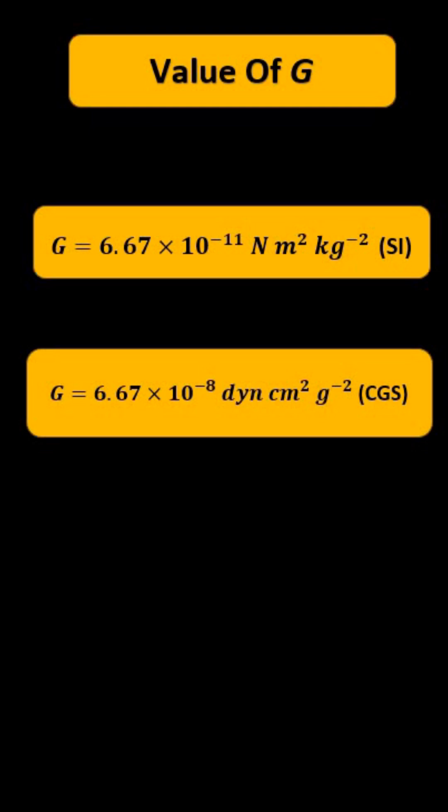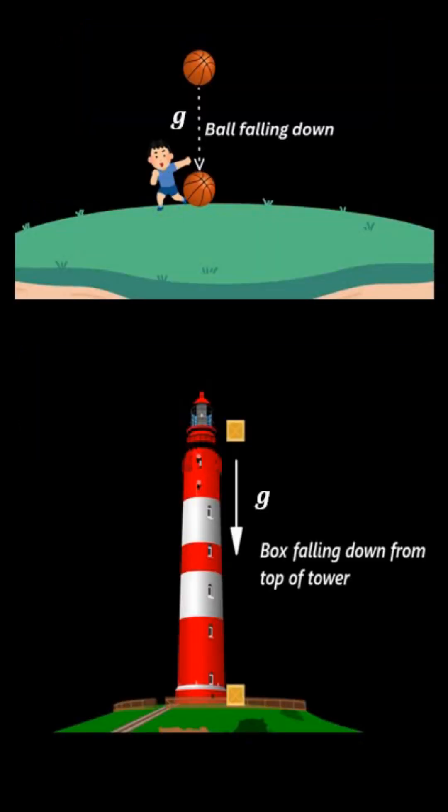Whereas, small g is acceleration due to gravity. It is the acceleration with which an object freely falling downwards under Earth's gravitational pull experiences during free fall.